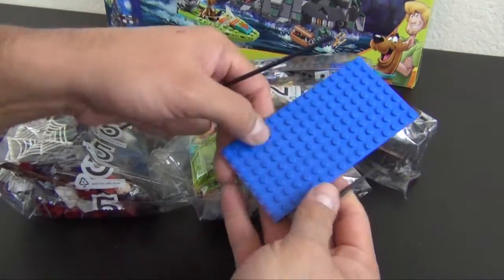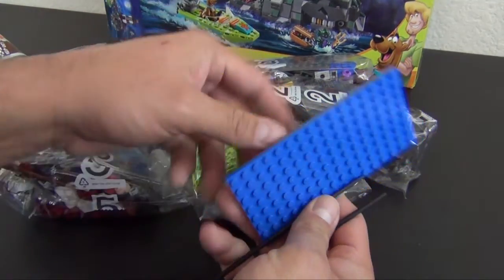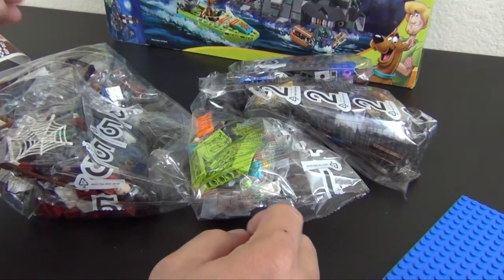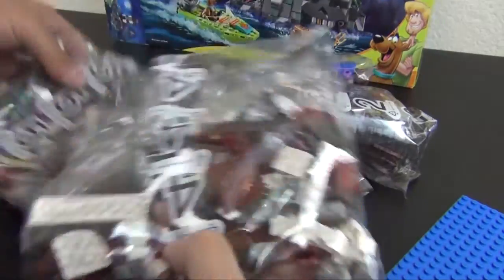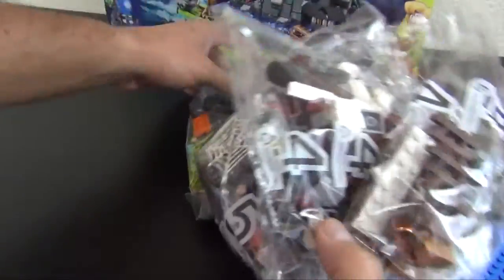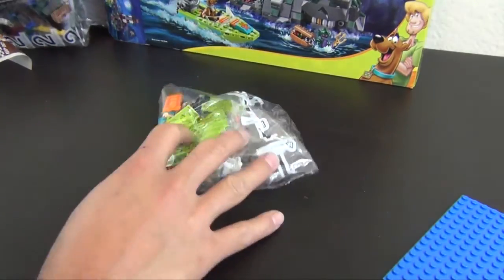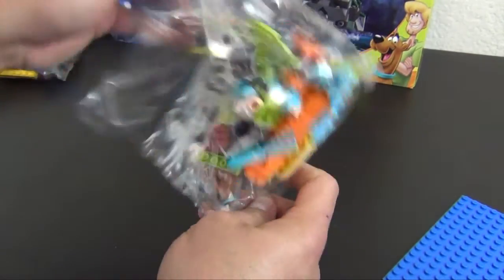There's some elements that are not in bags. We have a big plate and then these little flex tubes that are by themselves, and we have numbered bags one through five. So we'll start with bag number one.